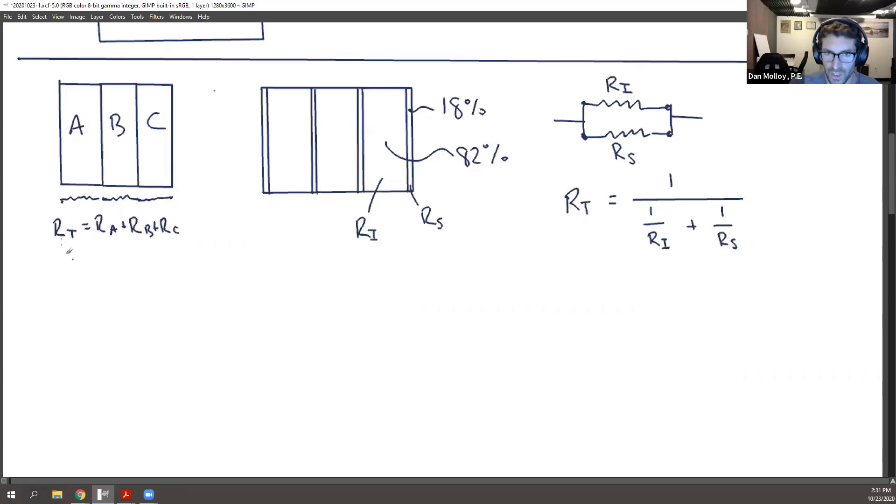We often talk about, like the whole goal of this or what we do with the composite wall is we work toward having this total resistance. And when we finally get it, we say, okay, then the overall heat transfer coefficient U is one over the total resistance.